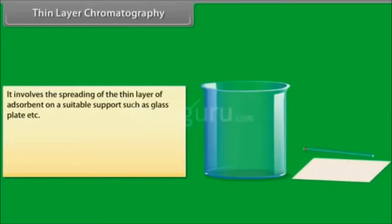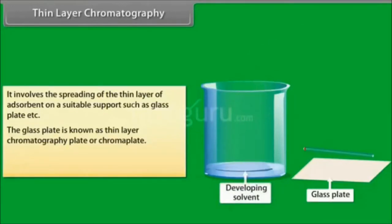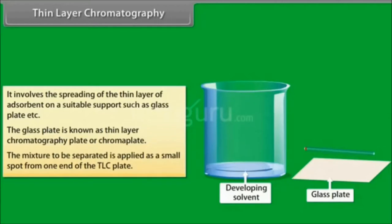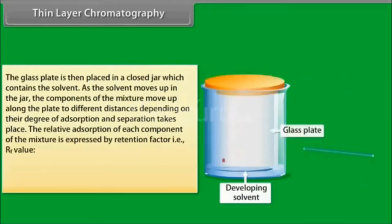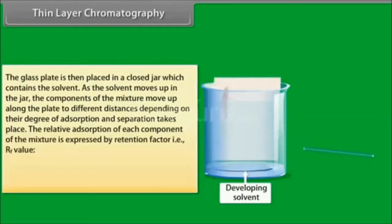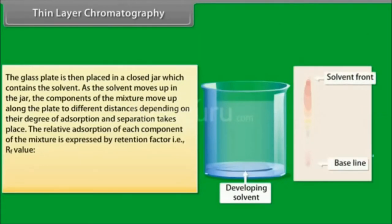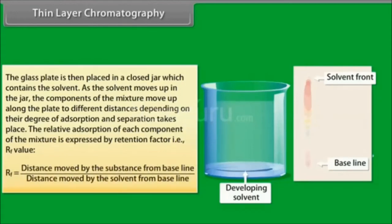Thin layer chromatography involves the spreading of a thin layer of adsorbent on a suitable support such as a glass plate. The glass plate is known as a TLC plate or chroma plate. The mixture to be separated is applied as a small spot from one end of the TLC plate. The glass plate is then placed in a closed jar which contains the solvent. As the solvent moves up in the jar, the components of the mixture move up along the plate to different distances depending on their degree of adsorption, and separation takes place. The relative adsorption of each component is expressed by the retention factor, i.e., Rf value.